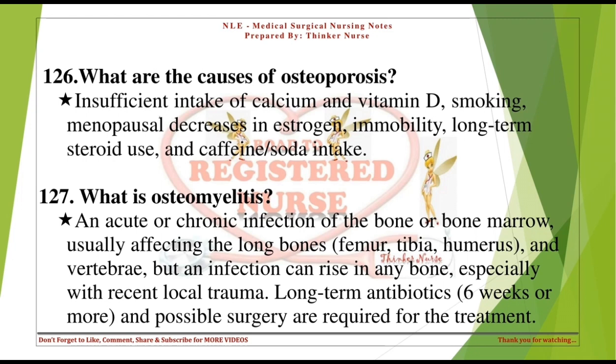What is osteomyelitis? An acute or chronic infection of the bone or bone marrow, usually affecting the long bones — femur, tibia, humerus, and vertebrae — but an infection can arise in any bone, especially with recent local trauma. Long-term antibiotics (six weeks or more) and possible surgery are required for treatment.